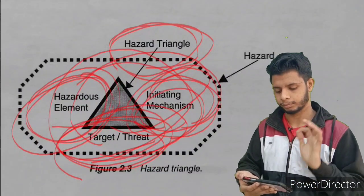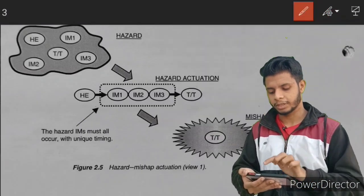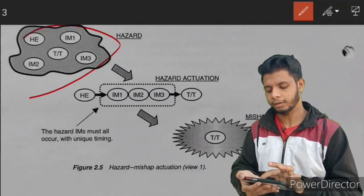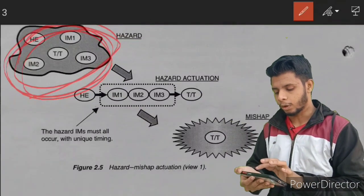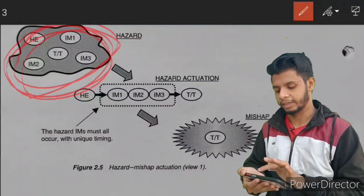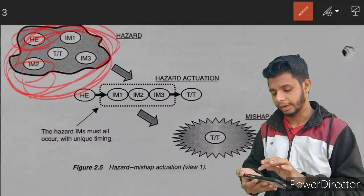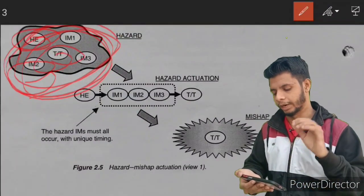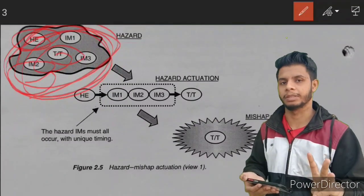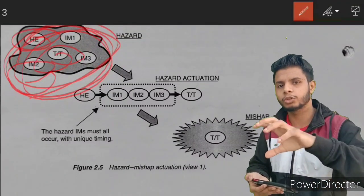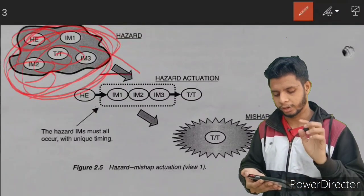Now let's move to another diagram. Here you can see one diagram showing a hazard as a molecule, with the three elements — HE (hazardous element), IM (initiating mechanism), and TT (target and threat) — in different configurations. It is not compulsory that only one HE, one IM, and one TT will be there; they can be multiple. But they should be configured in a particular pattern for a hazard to convert into a mishap.